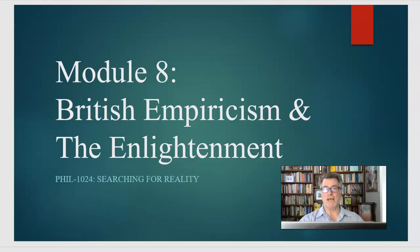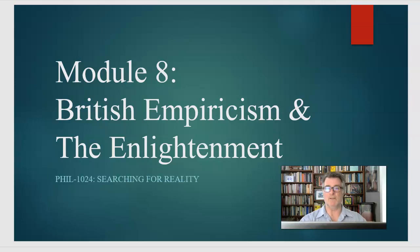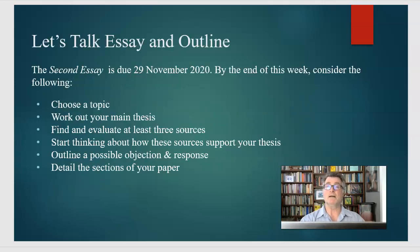Hello and welcome to Searching for Reality. We're in module eight now and we're looking at the British empirical thinkers, David Hume and John Locke in particular. Then we'll move tentatively over to the French Enlightenment. These two philosophical periods coexist — there's a bit of overlap but generally they're occurring at roughly the same time. David Hume was good friends with some of the French Enlightenment thinkers that we will talk about.